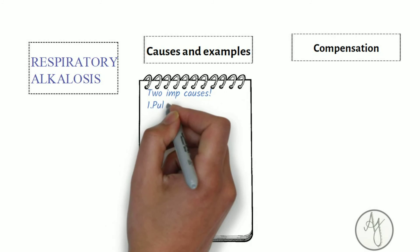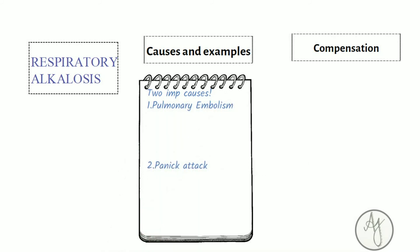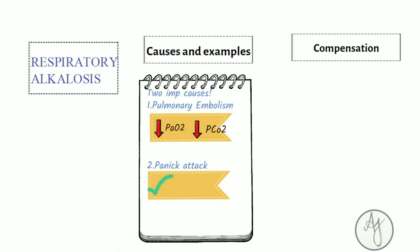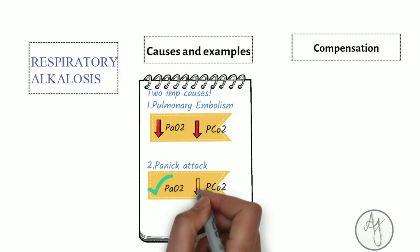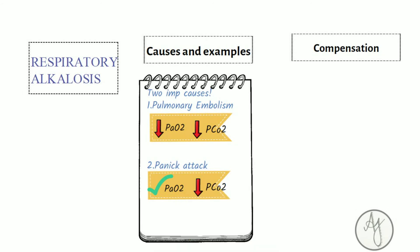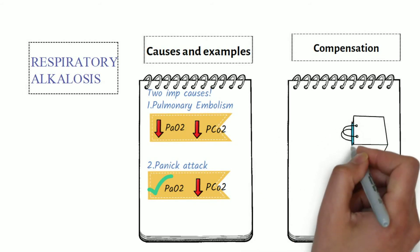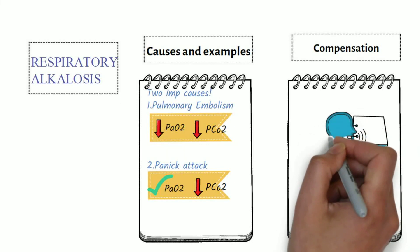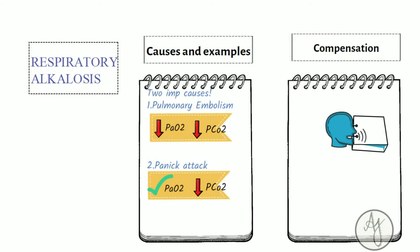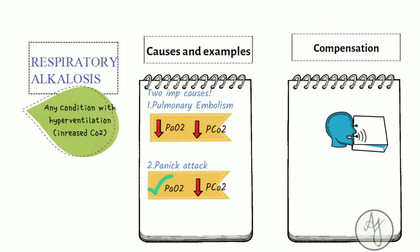Lastly, respiratory alkalosis has two very important causes: pulmonary embolism and panic attack — and both present very similarly. In pulmonary embolism, both oxygen and carbon dioxide levels are decreased. In a panic attack, the PaO2 is normal but only the PCO2 is decreased. In a panic attack we make the person re-breathe into a bag so they breathe in their own carbon dioxide, returning the acid component. Respiratory alkalosis happens in any condition causing hyperventilation. A third cause is increased mechanical ventilation — treatment is simply to decrease the ventilation rate.